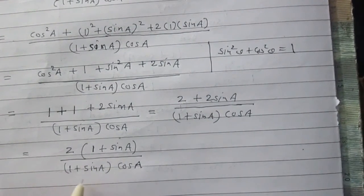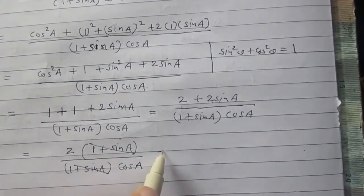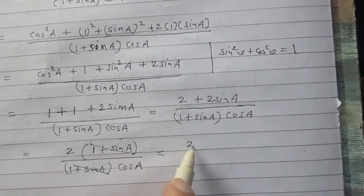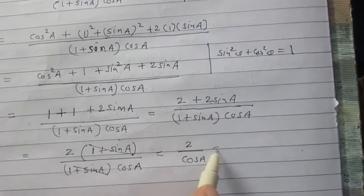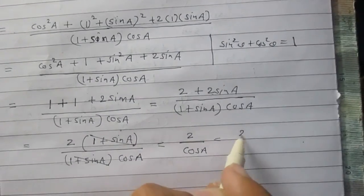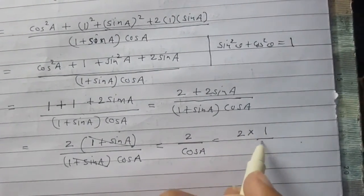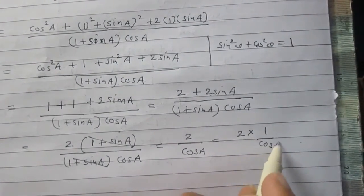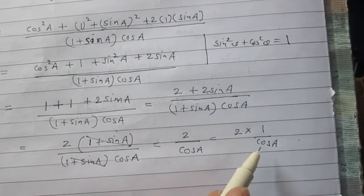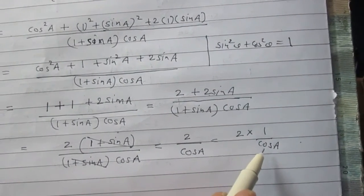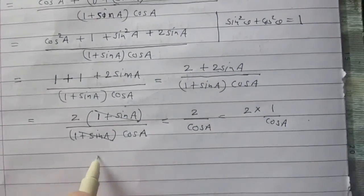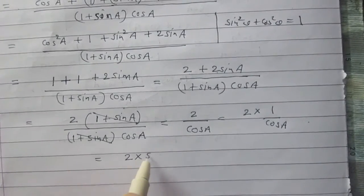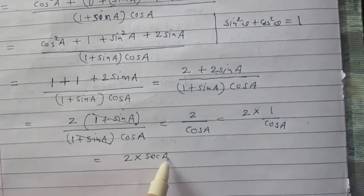Now, 1 plus sin A in the numerator and 1 plus sin A in the denominator can be cancelled. The result is 2 upon cos A. It is like 2 multiplied by 1 upon cos A. We know that the reciprocal of cos A is sec A. So finally, we can write twice of sec A.